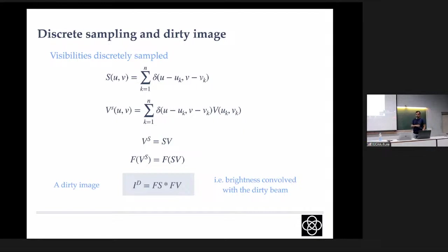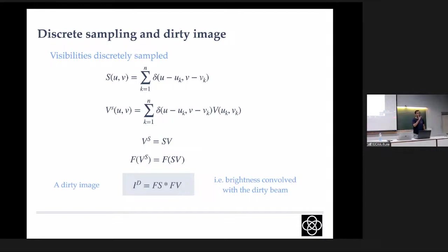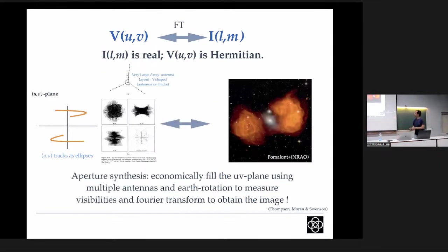In radio interferometry there are two places where we can directly apply Fourier transform concepts. One is in the case of single dish design, and the second is how it affects the imaging itself. A signal is coming in, getting diffracted - so that's your telescope design affecting the imaging properties, starting with resolution. Now we also have to carry out a Fourier transform to go from the UV plane to the image plane.